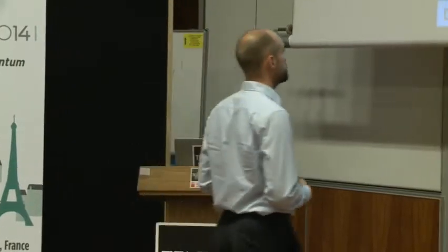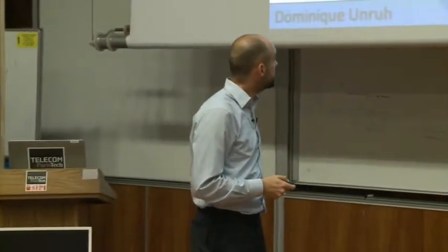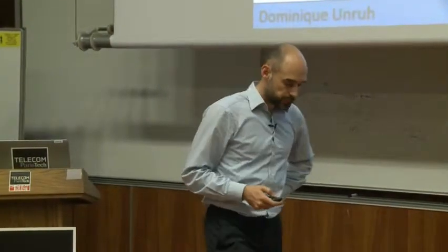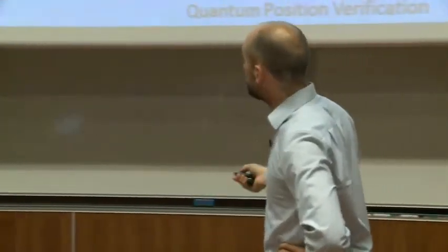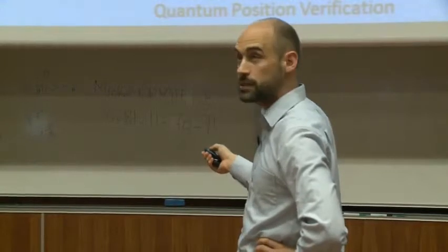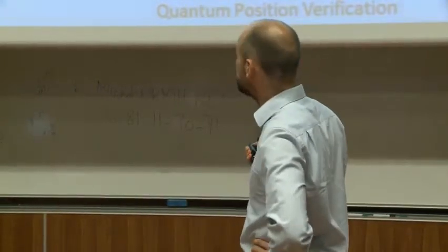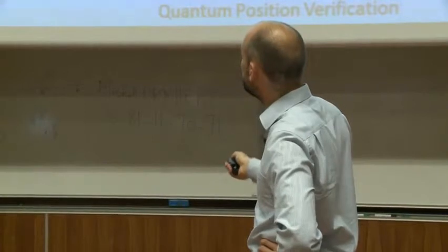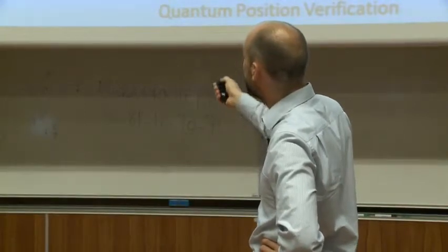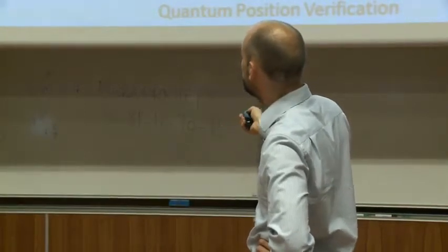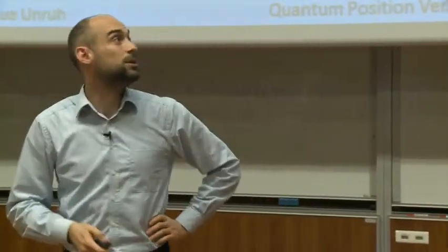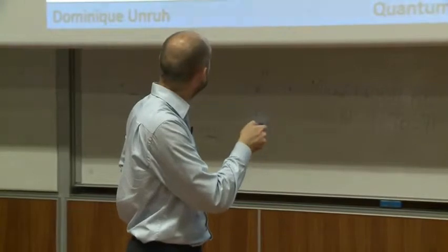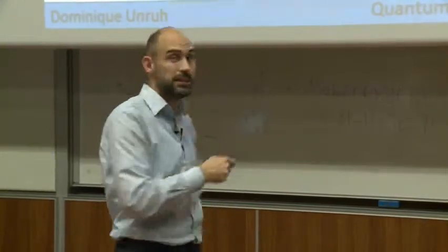Let me show you the security proof. We want to show that in this setting, the verifier sends psi and x1, this verifier sends x2. There is no adversary in this space region, so he cannot do any operations here, he can do a lot of operations here, a lot of operations here. We want to show that he will not be able to send the correct measurement results here and here in time.